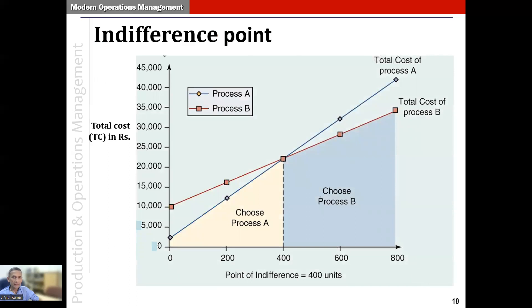Graphically, the indifference point can be understood as follows. The blue line represents the total cost of option A and the red line represents the total cost of option B. Because their slopes are not equal, the two lines intersect at a point where both options have the same total cost — that is the indifference point. In this example, the indifference point is at 400.